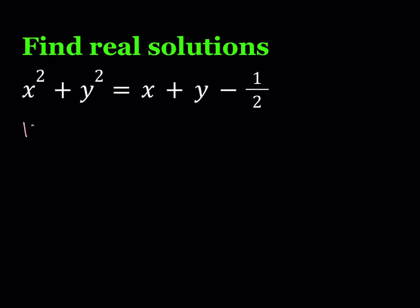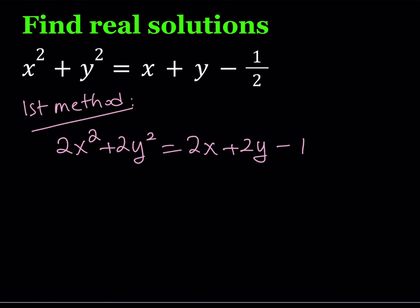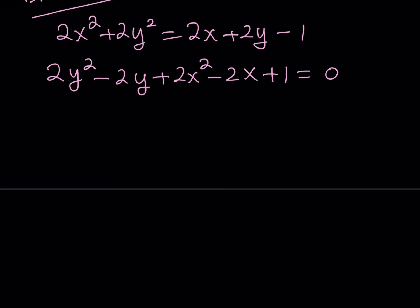Let's start with the first method. For the first method, I'm going to multiply both sides by two first and get rid of the fraction. Then let's put everything on the same side. When I do, I want to write 2y squared first, and then minus 2y plus 2x squared minus 2x plus 1 equals 0.